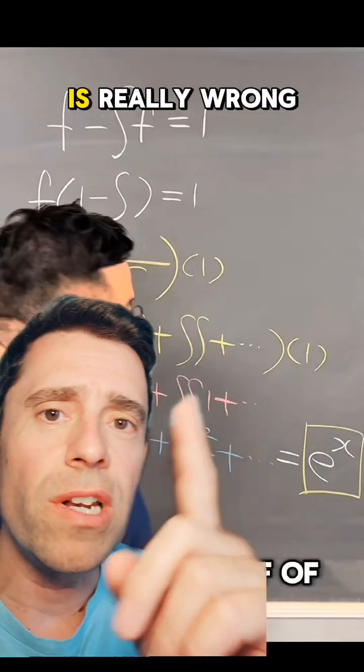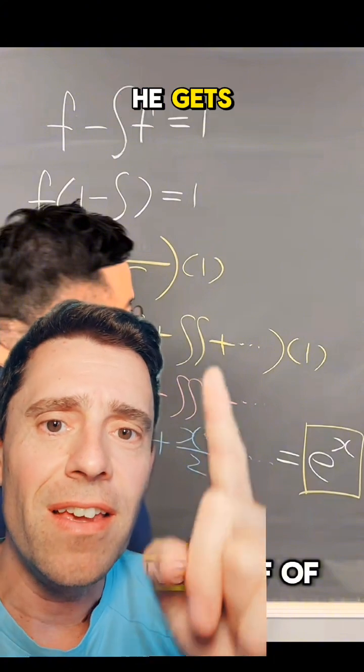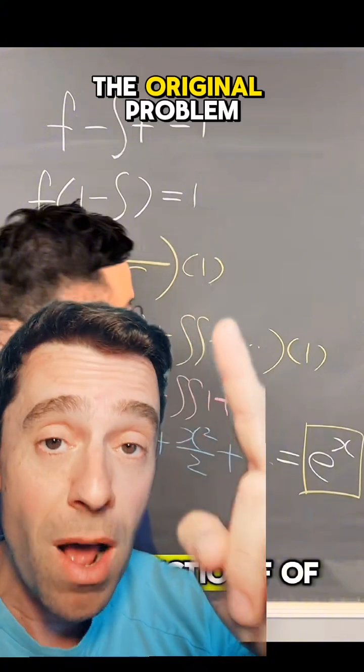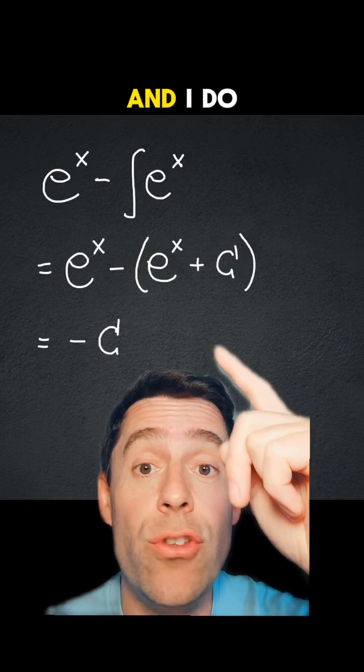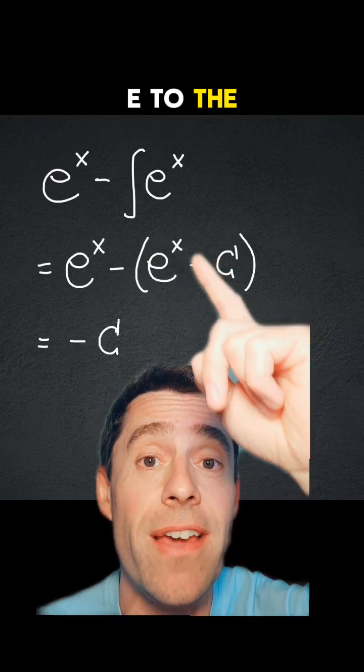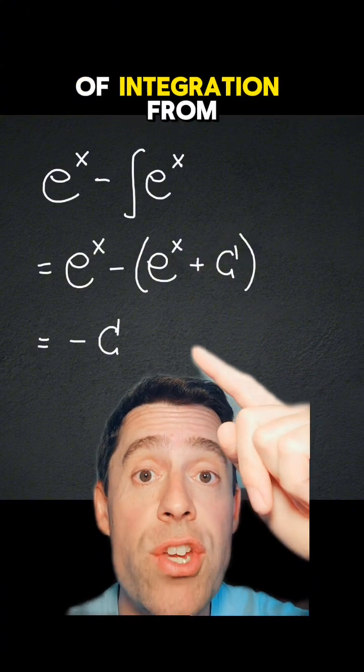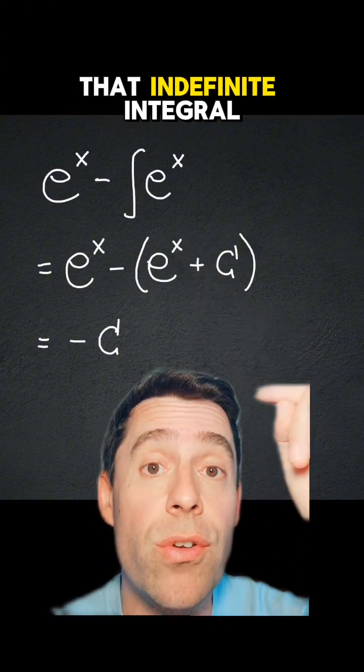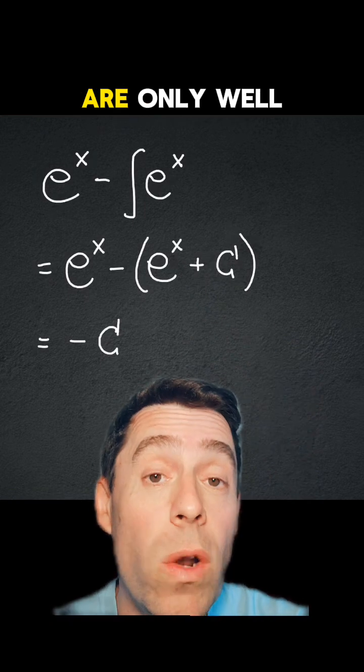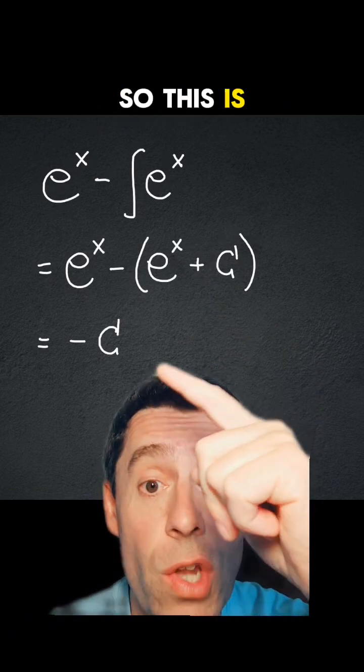You know something is really wrong with all these craziness when the solution he gets, it's not even a solution of the original problem. If I take f to be e to the x and I do e to the x minus the indefinite integral of e to the x, then what I'm going to get is minus the constant of integration from that indefinite integral, because indefinite integrals are only well defined up to constants.